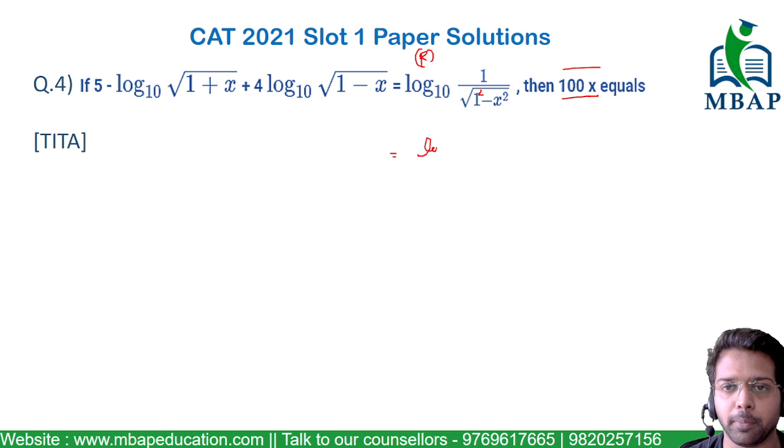The right-hand side expression becomes log₁₀(1/√(1-x) × 1/√(1+x)). We know log(a × b) = log a + log b. Taking the reciprocal, it becomes -log₁₀√(1-x) - log₁₀√(1+x).